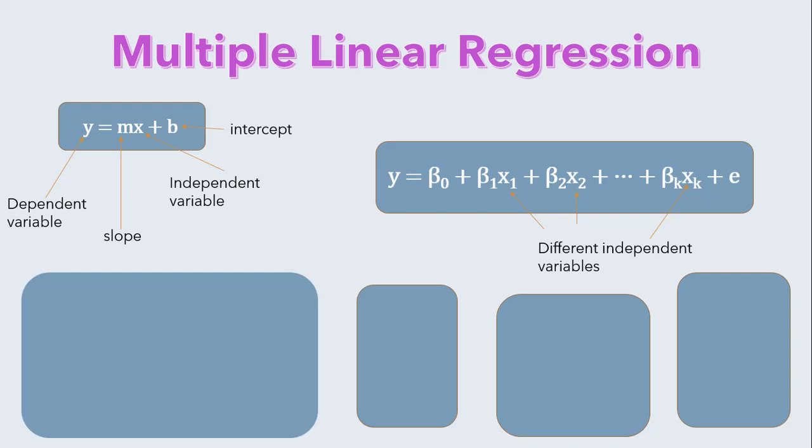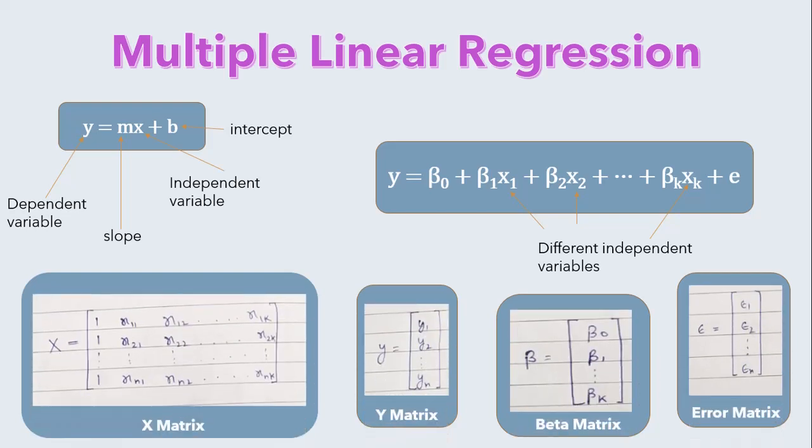Let's transform this into matrices. We have matrices for x, y, beta and error values as shown on the screen. With this compact notation, the linear regression model can be written in the form y equals x beta plus e.